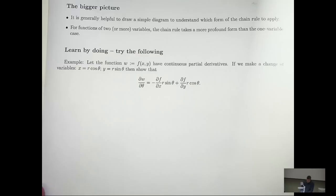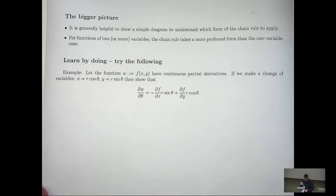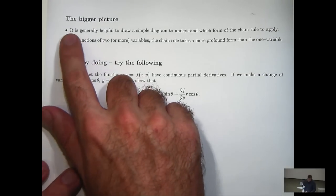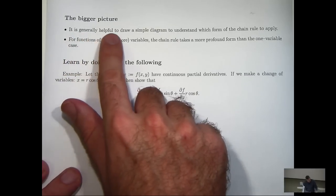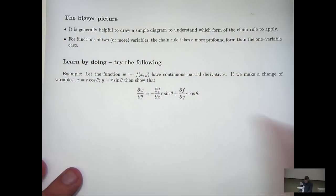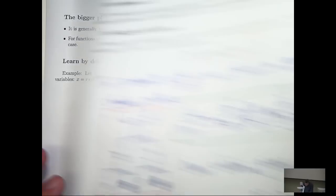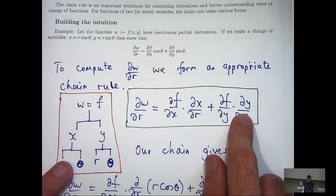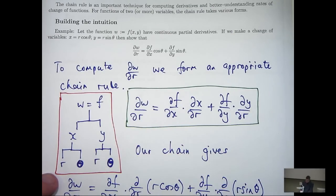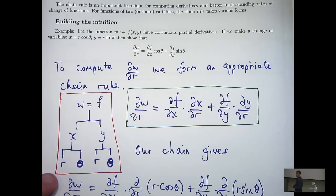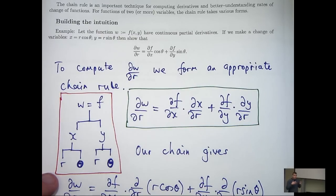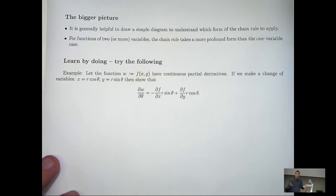Now, let's just talk a little bit about the bigger picture. What are some techniques that you can use for all sorts of problems? Well, at least in my opinion, it's generally helpful to draw a simple diagram to understand which form of the chain rule to apply. Now you may look at this chain rule here and go, well, I can remember that. Well, if you can, that's great. But when you get to many variables and more complicated cases, it's almost impossible to remember the chain rule. So my advice is to draw a simple diagram.